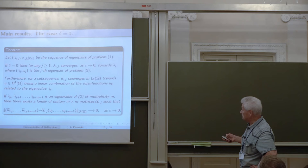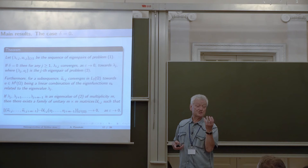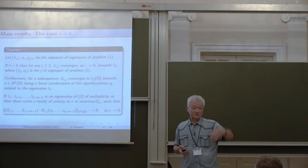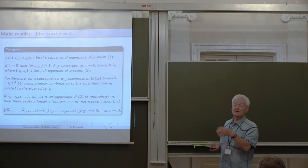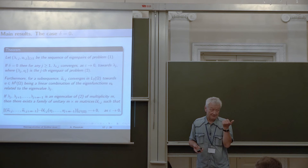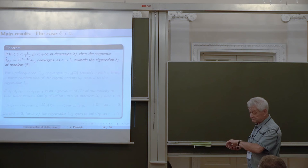In the case delta equals zero, we have convergence without any renormalization, because the (n minus 1)-dimensional volume of the cylinders is of order 1. But if delta is greater than zero, this volume is vanishing, and we need some compensation — the eigenvalues will tend to infinity, even the first one. So we must renormalize them in order to have convergence.